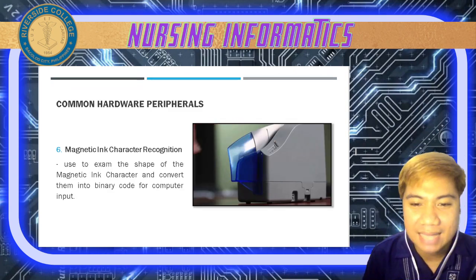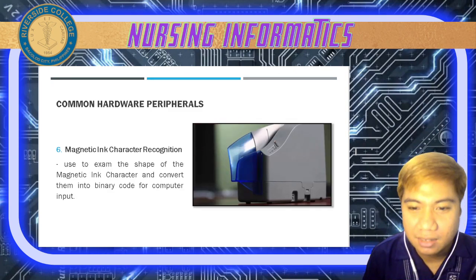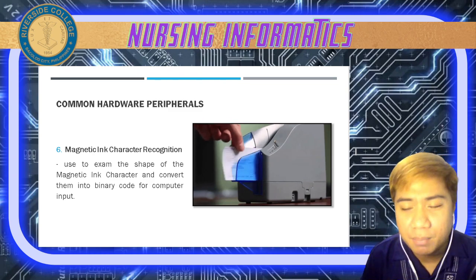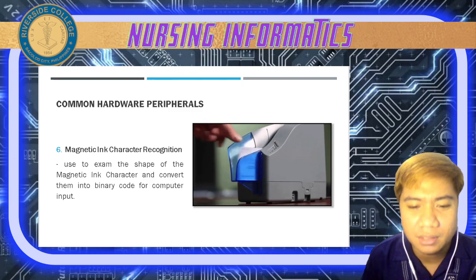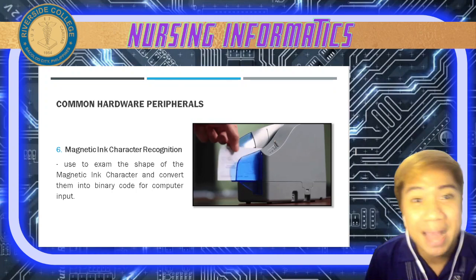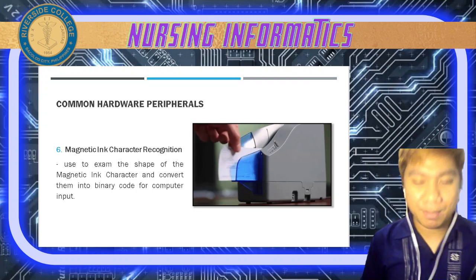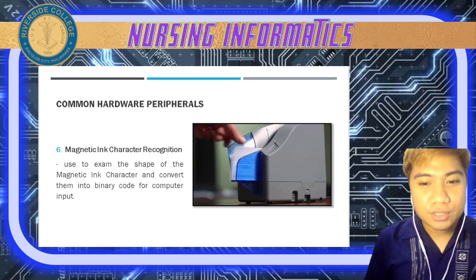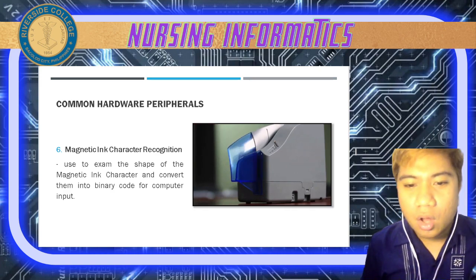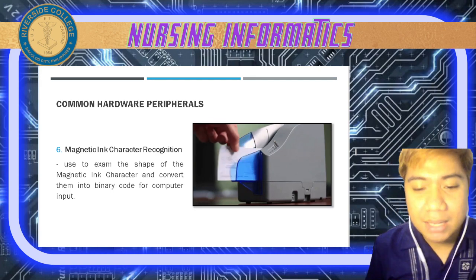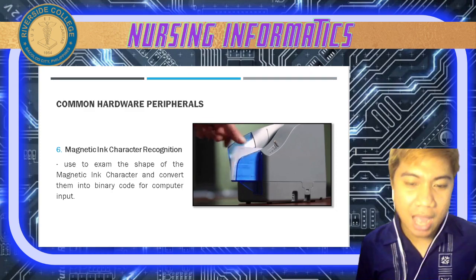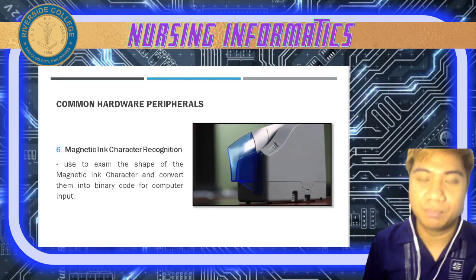Next we have Magnetic Ink Character Recognition — the most common one used in imprinting on bank checks. It is used to examine the shape of the magnetic ink characters and convert them into binary code for computer input.